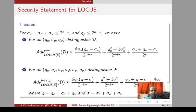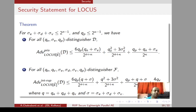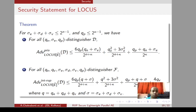Now let's come to the provable security of the LOTUS and LOCUS modes. We have proved the privacy of both LOTUS and LOCUS, and instead of proving INT-CTXT security we have directly proved INT-RUP security. Since INT-RUP security implies INT-CTXT security, proving INT-RUP gives us INT-CTXT as well. Regarding privacy security, we can have (n+k)/2 bit security, which is very high — if n equals k then we have full n-bit security, and if n is less than k we have even more than n-bit security, all in the ideal cipher model.